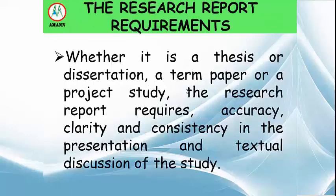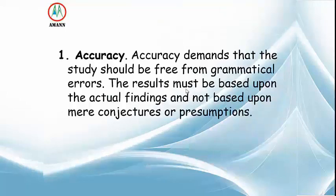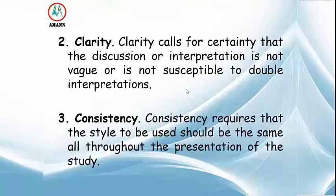The research report requirements: whether it is a thesis or dissertation, a term paper, or a project study, the research report requires accuracy, clarity, and consistency in the presentation and textual discussion of the study. Accuracy demands that the study be free from grammatical errors and that results be based upon actual findings, not mere conjectures or presumptions. Clarity calls for certainty that decisions or interpretations are not vague or susceptible to double interpretations. Consistency requires that the style used be the same throughout the entire presentation of the study.